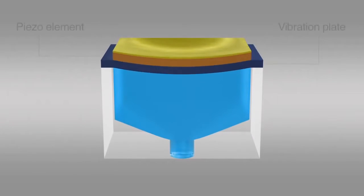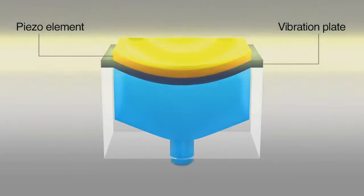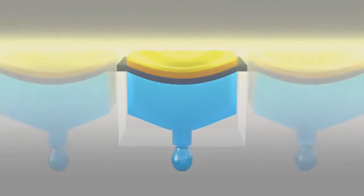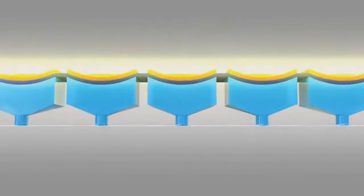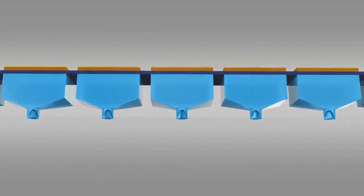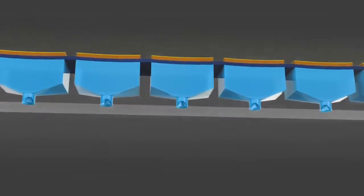Each MicroPiezo printhead contains rows of densely arranged nozzles. These are driven by individual microns-thin piezoelectric elements that contract when voltage is applied, moving a vibration plate more than 40,000 times a second to produce a precise stream of microscopic ink droplets.